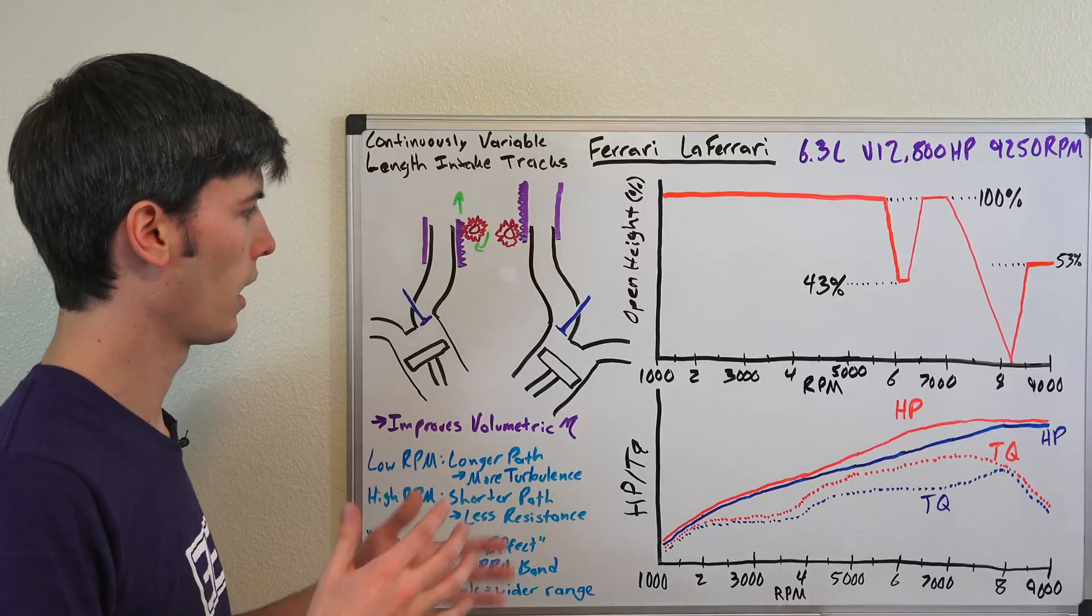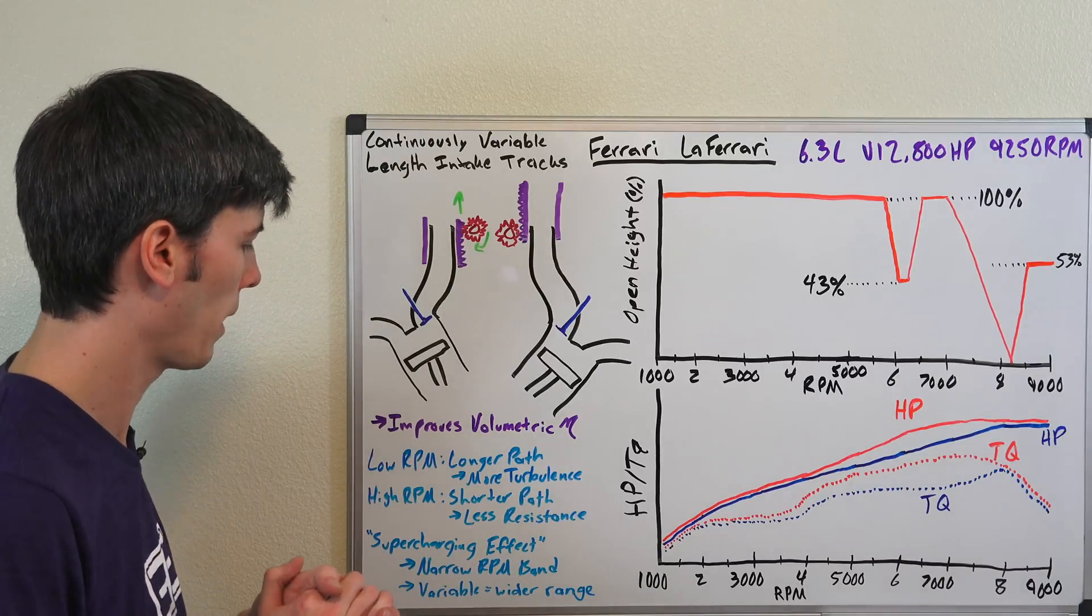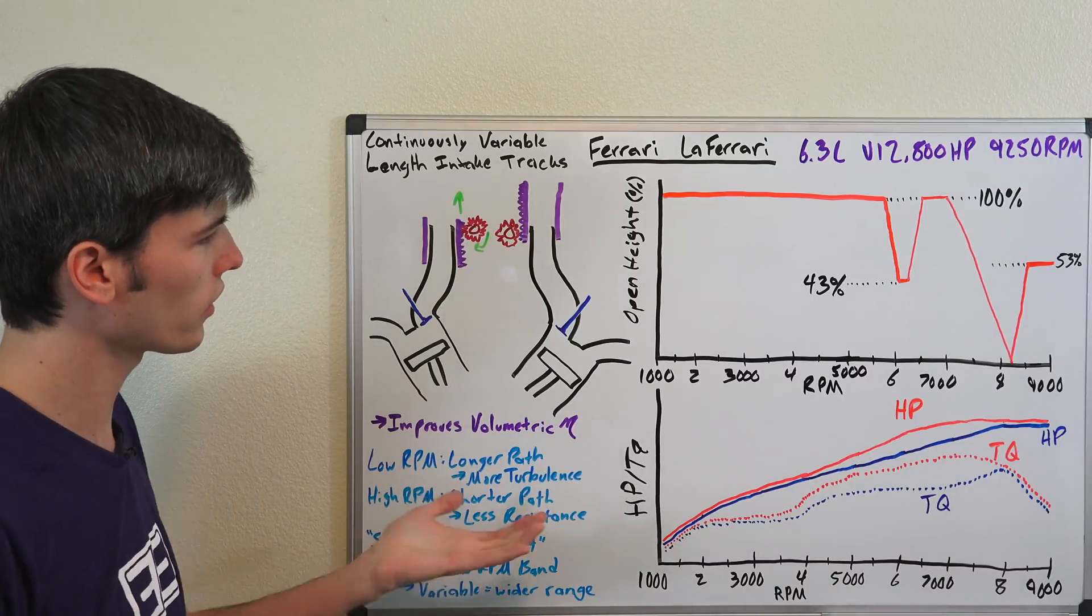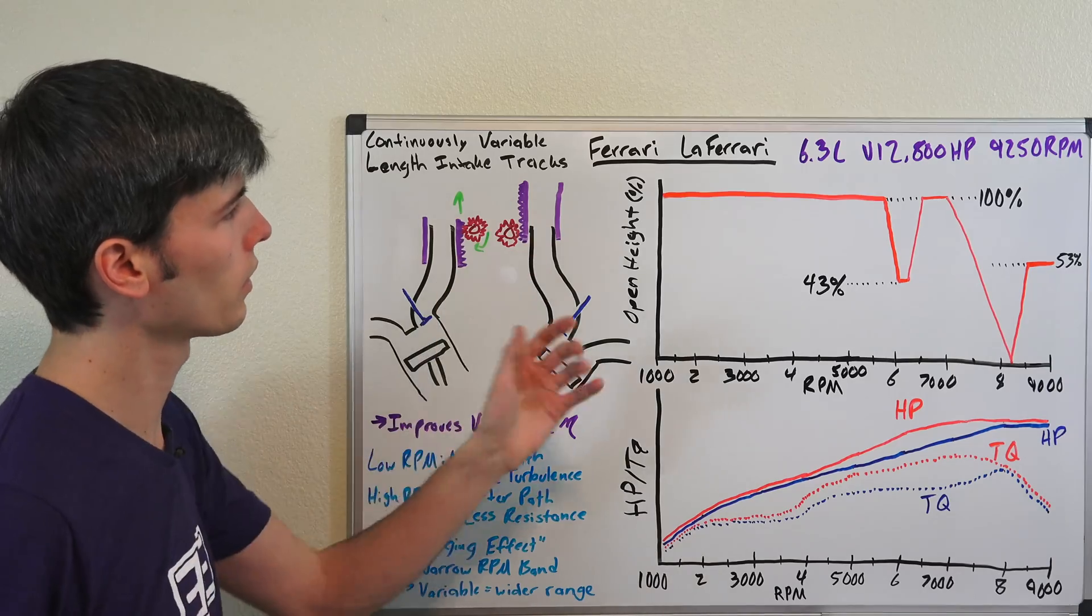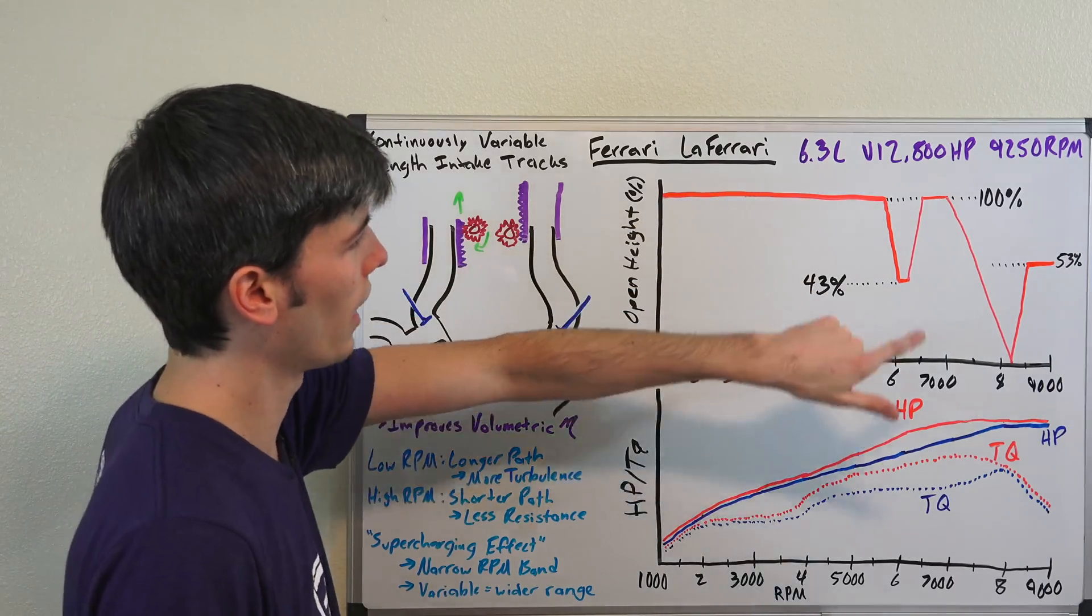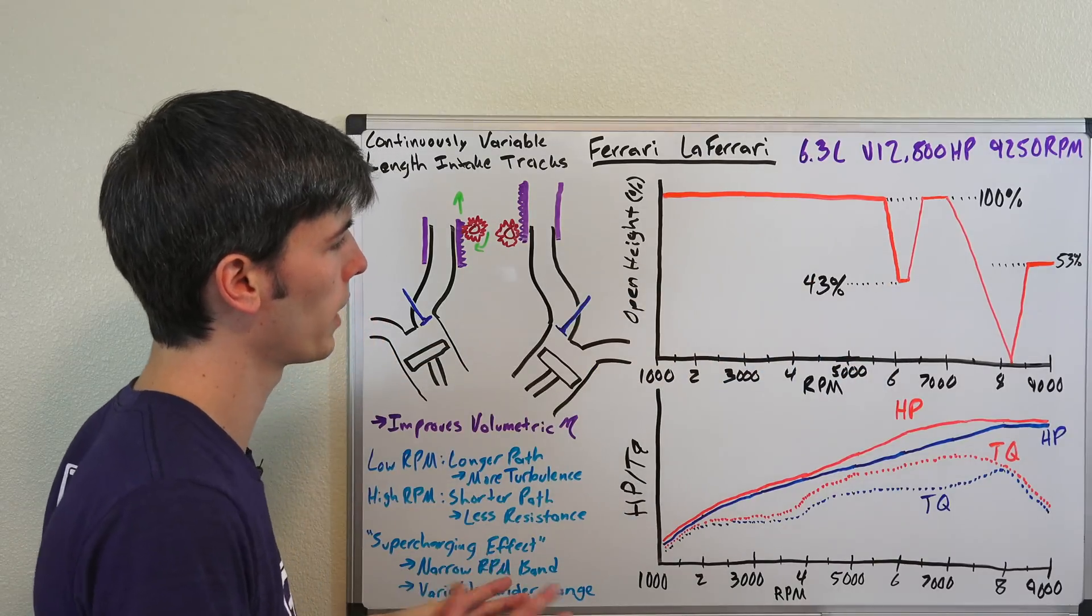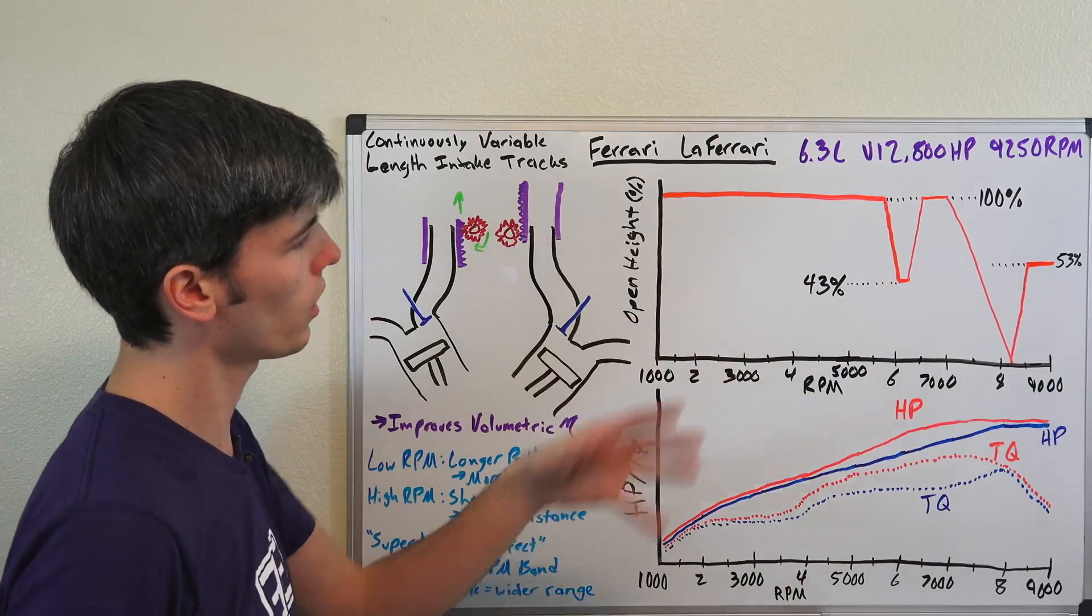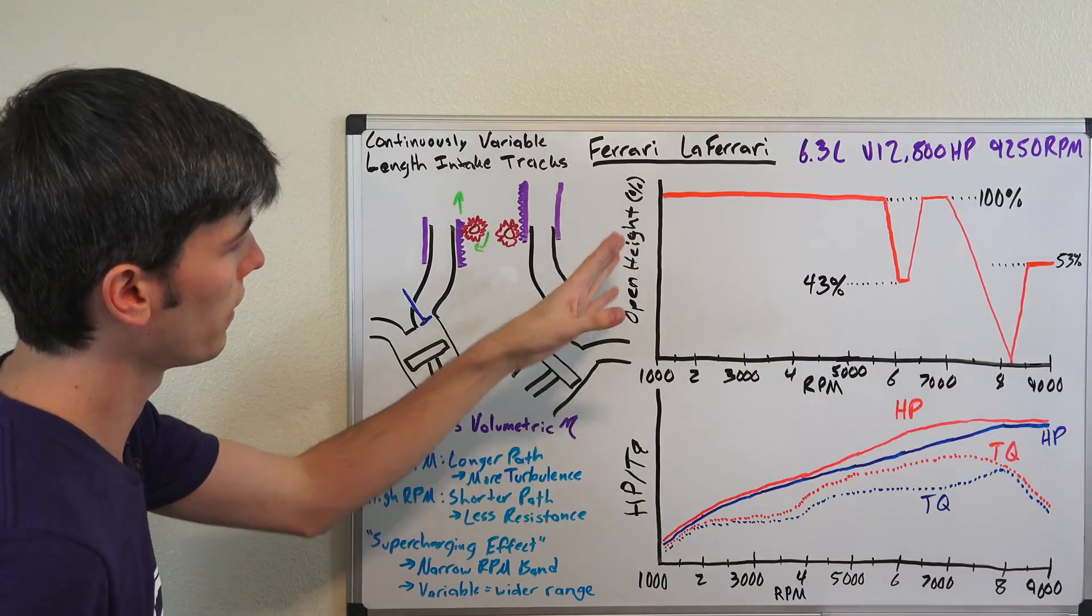More combustion and create more power ultimately. And so this is something that Ferrari has done with the LaFerrari, the V12 engine revving up to 9,250 rpm, and they actually show some charts where you can look at the opening.